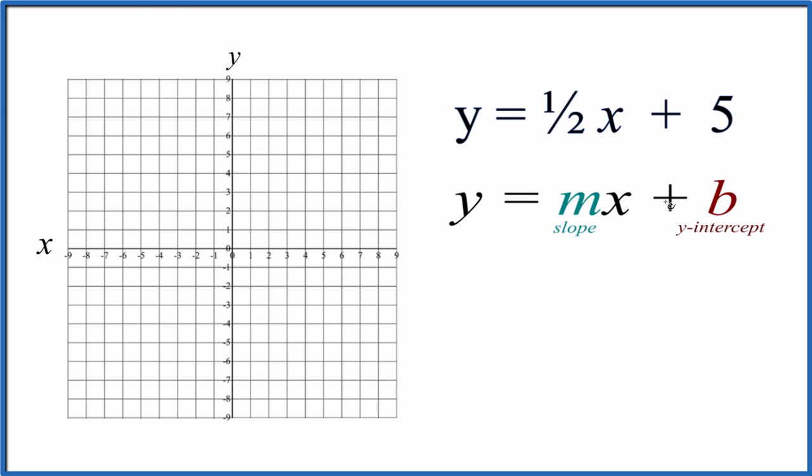So we have y equals mx plus b. b, that's the y-intercept, and that is 5. What that means is that's where we'll intercept this y-axis here. So b is 5. We're going to go down to 5, and that's where we're going to cross the y-axis.